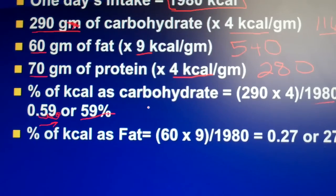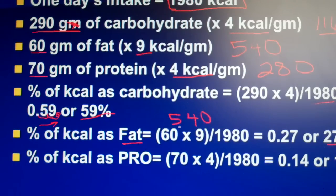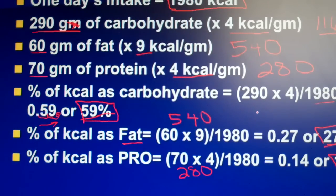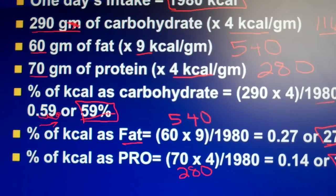We do the exact same thing for fat. Our 60 times 9 gave us 540. 540 divided by 1,980 gives us 0.27, or 27% from fat. And for protein: 70 times 4 is 280, and 280 divided by 1,980 comes out to 0.14, or 14%. These numbers are actually about right — carbohydrates should be mid-50s to 60%, around 30% for fats, and about 15% for protein.